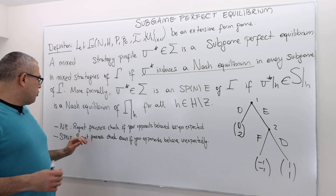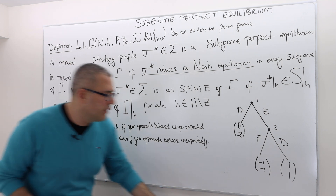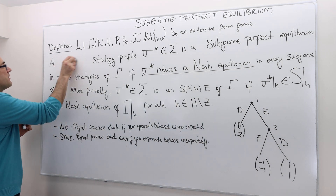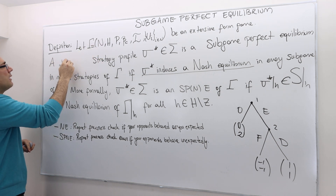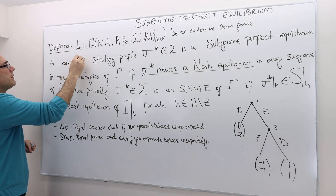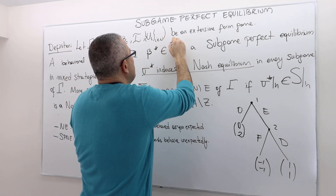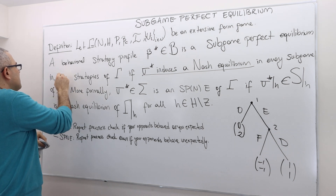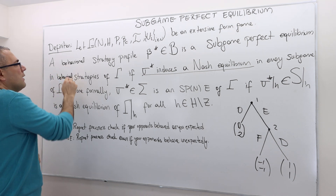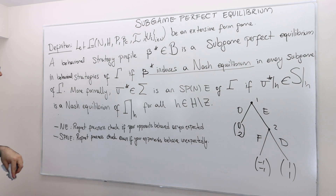That's it. What I would like to underline is the following. What if I look at behavioral strategies? It doesn't matter — it's just a matter of notation. So take any extensive form game. A behavioral strategy profile — we don't denote it by Sigma but Beta Star in this fat B set — is a subgame perfect equilibrium in behavioral strategies of this game if Beta Star induces a Nash equilibrium in every subgame of the original game.